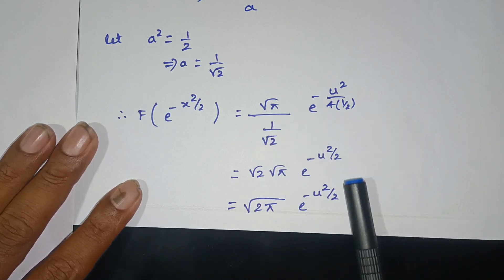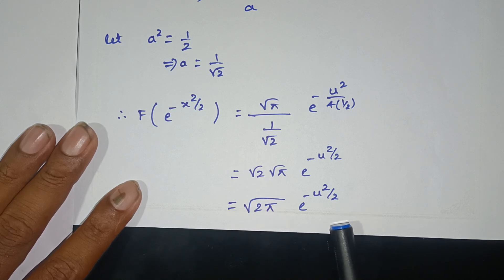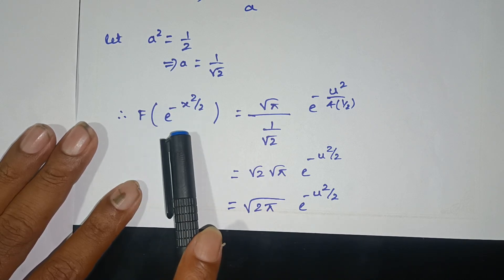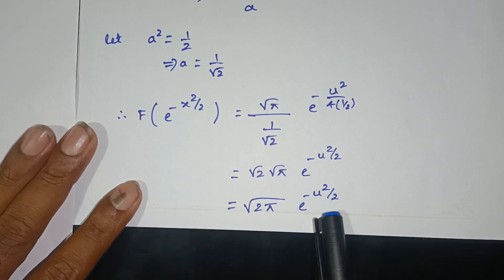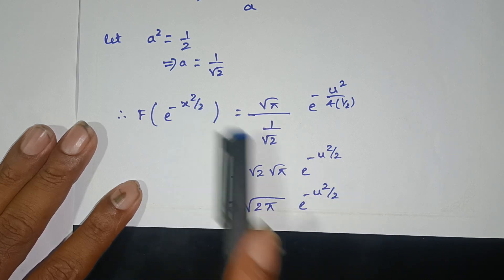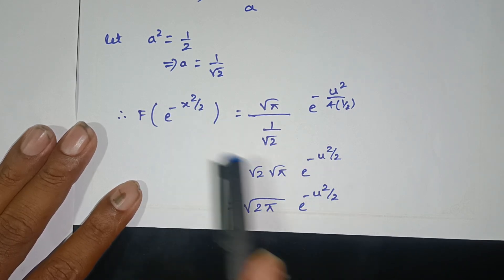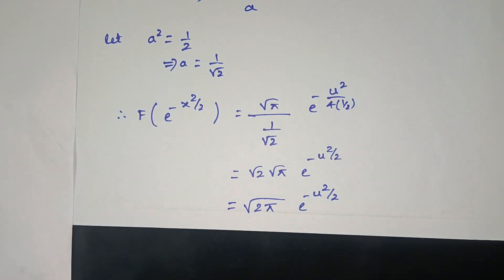The function e power minus x square by 2 gives F equals e power minus u square by 2, which is the same form with the variable change x to u. Therefore the given function e power minus x square by 2 is self-reciprocal under the complex Fourier transform. Thank you.